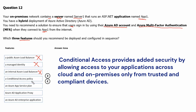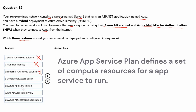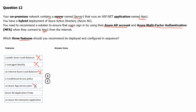The next option is a conditional access policy. Conditional access policy can be used to enable multi-factor authentication on an application, therefore this is one of the answers. Next is an Azure App Service plan. An Azure App Service plan is a set of compute resources for a web app to run — it is similar to a server farm in traditional web hosting and is not used for authentication purposes. We are now left with three features which will be required for the authentication.